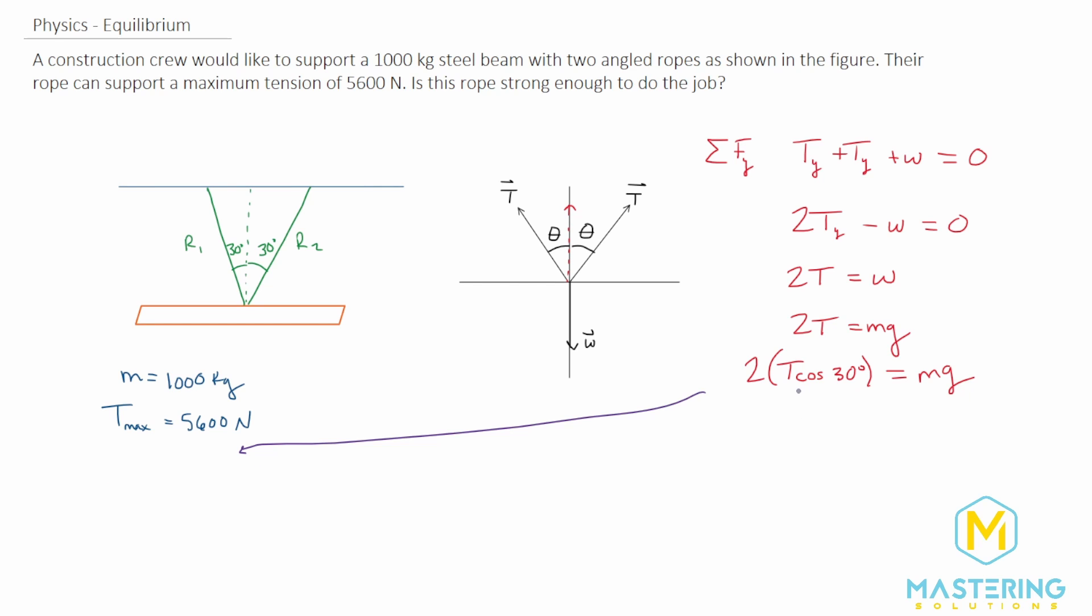And then let's come over here just to give us a little bit more room, and we want to isolate T, so we'll divide both sides of the equation by 2 cosine of 30. So now that will cancel, and now what we'll be left with is tension is equal to mg divided by 2 cosine of 30. And when we plug in our numbers, the mass of course is a 1000 kilogram beam, and then gravity for g obviously is 9.8 meters per second squared, and then we'll divide all of that as we said by 2 cosine of 30 degrees.